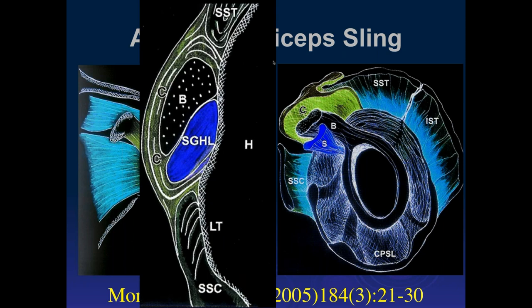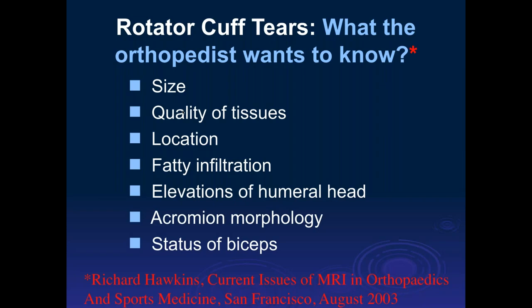The superior glenohumeral ligament comes just anterior to and underneath the biceps anchor, forming a sling that holds the biceps in position — otherwise it tends to sublux anteriorly and inferiorly, which is a common cause of anterior shoulder pain. In cross-section, the superior glenohumeral ligament comes from anteriorly, just below the biceps anchor, passes underneath the biceps and back up again. We'll discuss pathology in that area when we cover the biceps tendon in another lecture.